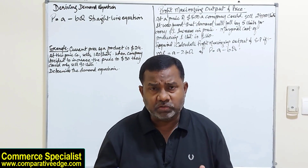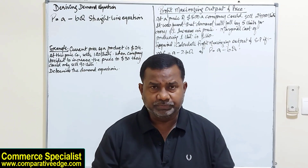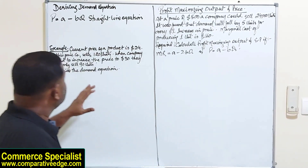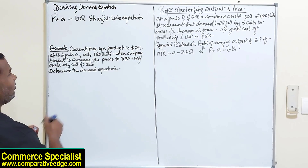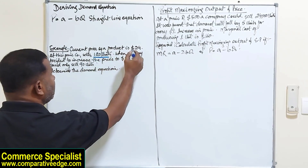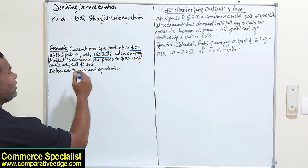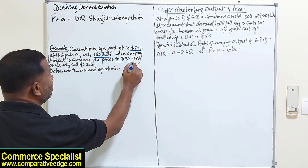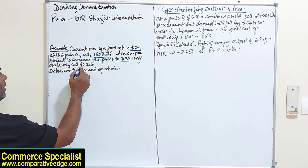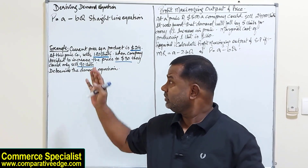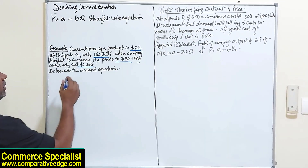The straight line demand equation helps us understand the price at which a consumer would be willing to buy a particular product. Here is a question: the current price of a product is $24, and at this price the company is able to sell 120 units. The company decided to increase the price to $30 — an increase of $6 — and they were only able to sell 90 units. This aligns with the law of demand. We are asked to determine the demand equation.